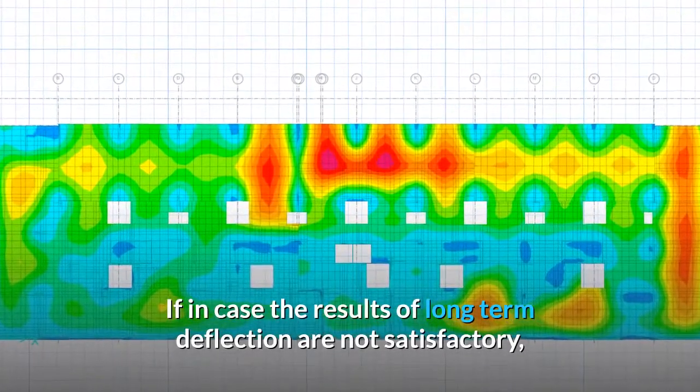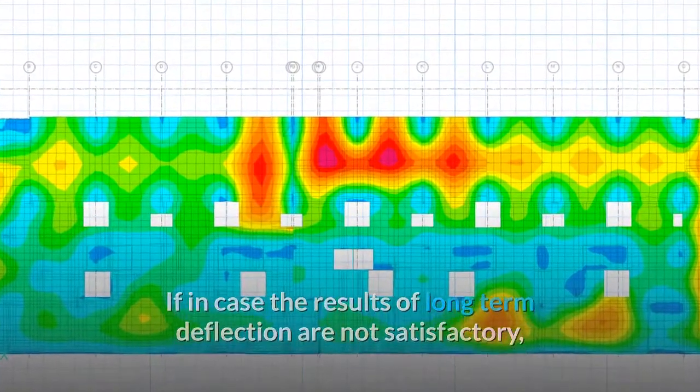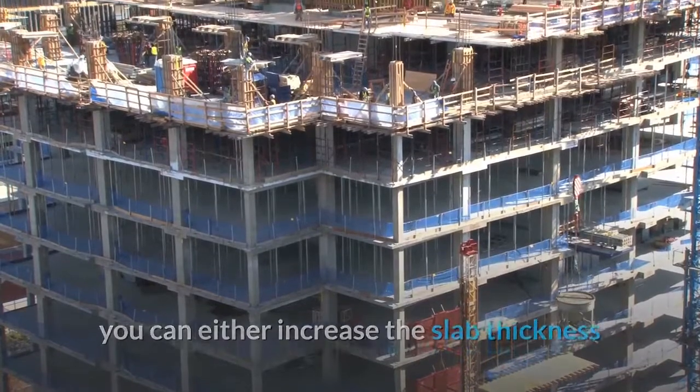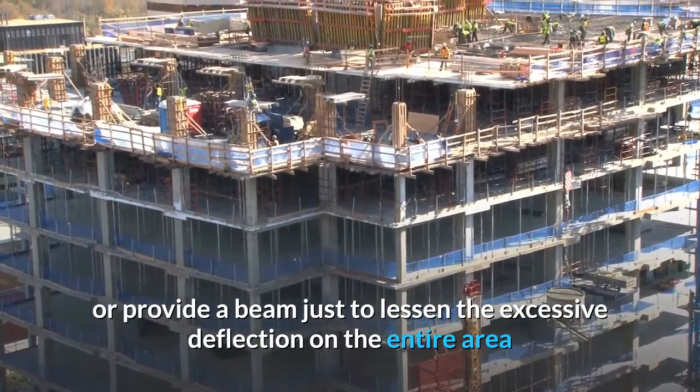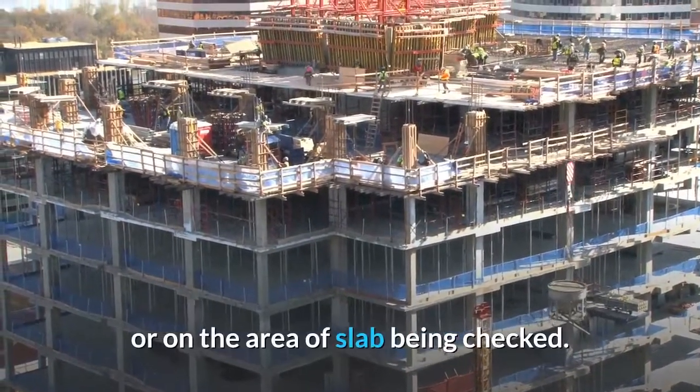If the results of long-term deflection are not satisfactory, you can either increase the slab thickness or provide a beam just to lessen the excessive deflection on the entire area or on the area of slab being checked.